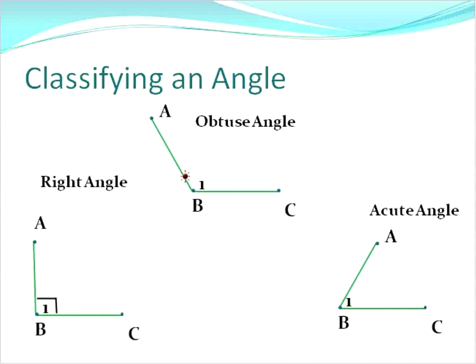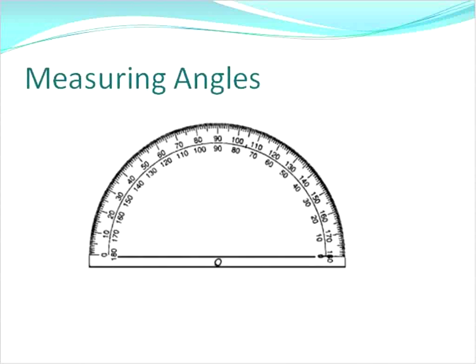Again, I labeled them in both ways having the number on the interior of these three points and also with our letters, so we could say this is an acute angle ABC or angle number one. So this is how we would classify three different angles by their measurement, or by how many degrees they are.